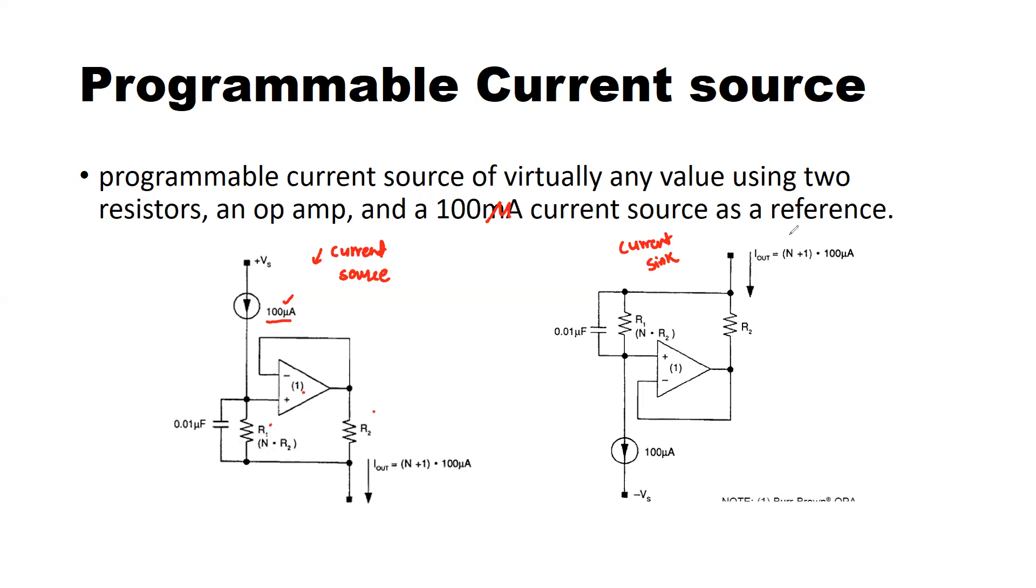And this circuit will work as current sink for receiving a current of any value more than 100 microampere, multiples of 100 microampere.